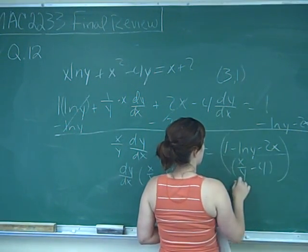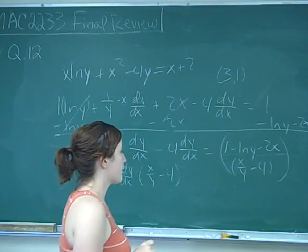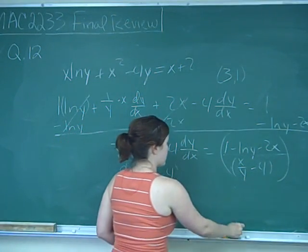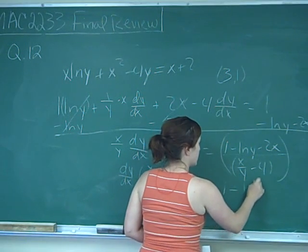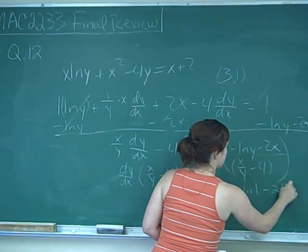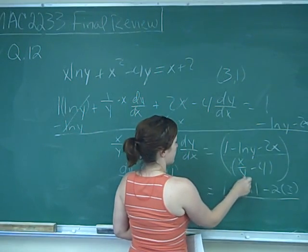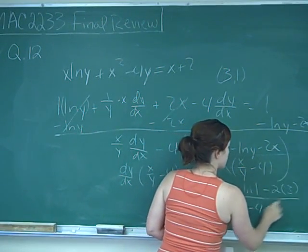So this is my derivative, and I'm wanting it at the point (3, 1). So when I plug in that point, I get 1 minus ln of 1 minus 2 times 3 over 3 divided by 1, which is just 3 minus 4.